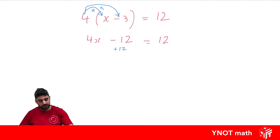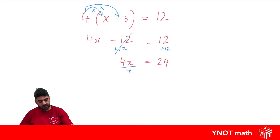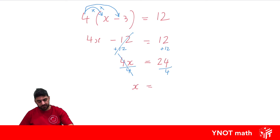We're going to plus 12 to both sides. Negative 12 plus 12 is 0, so we're left with 4x on that side, and 12 plus 12 is 24. We can now divide both sides by 4 to get x by itself. 4 divided by 4 is 1, so we're left with x, and 24 divided by 4 gives us 6 for our final answer.